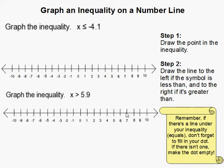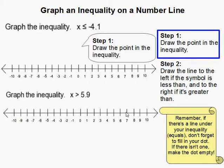To graph an inequality on a number line, the first thing to do is draw the point in the inequality. So in this case, our value is negative 4.1, or negative 4 and 1 tenth. So I put a point here. Notice I did a solid, thick dot. That's because there is a line or an equal sign under the symbol.